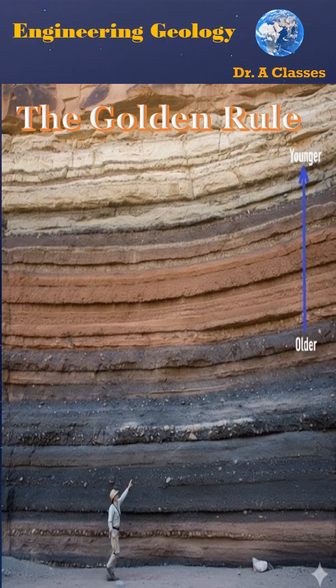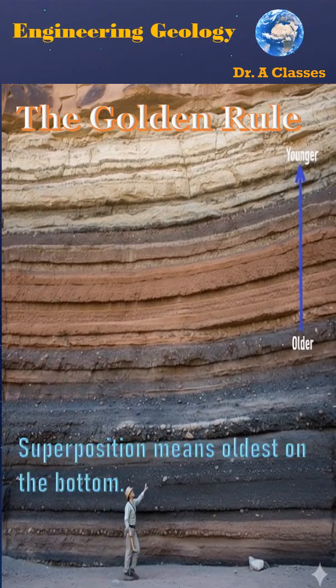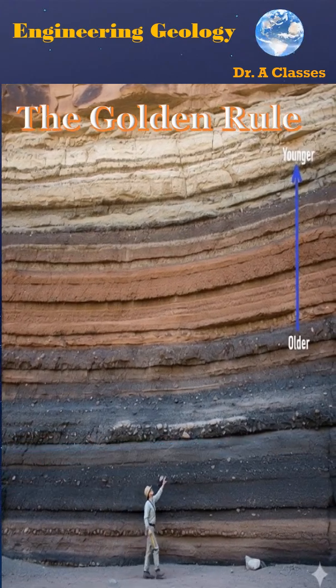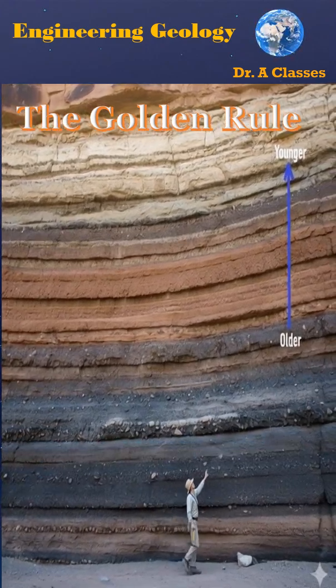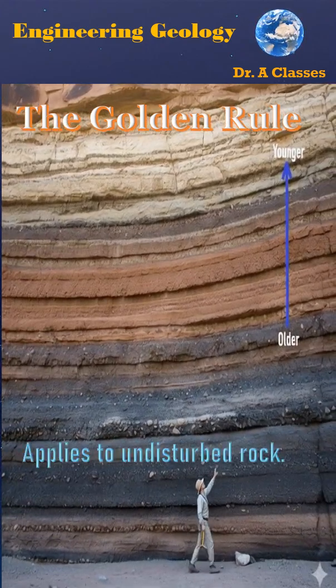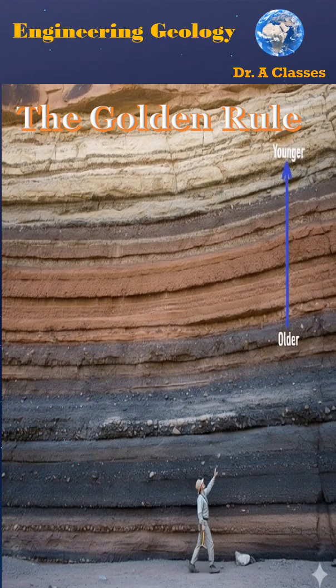The Golden Rule: The fundamental rule is the principle of superposition. In undisturbed rock, the oldest layers are always at the bottom, and the layers get progressively younger towards the top.